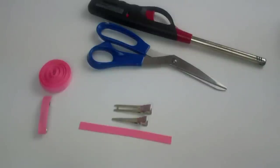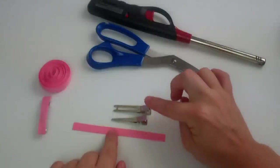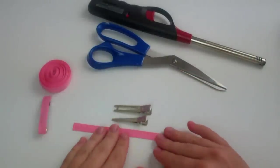Now we're going to cut our ribbon. I've already pre-cut this ribbon to 4 1/2 inches. 4 1/2 inches will work for your alligator clips and your double prong clips.